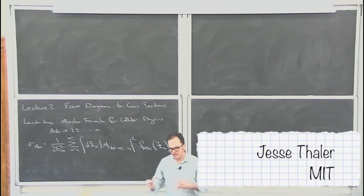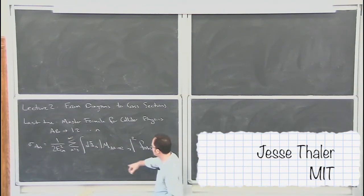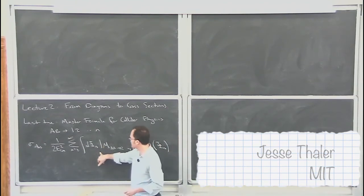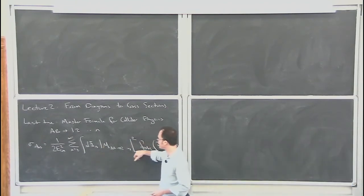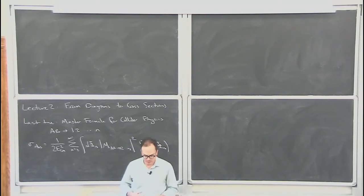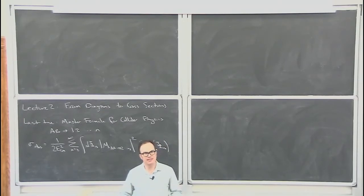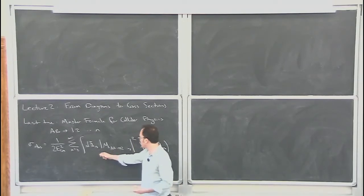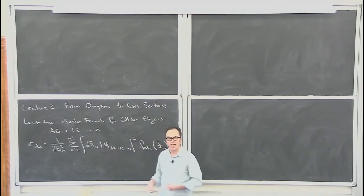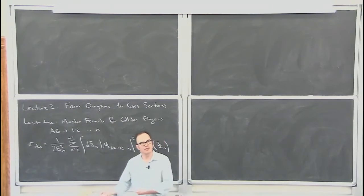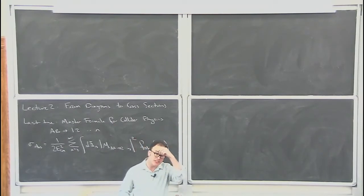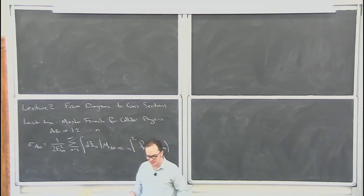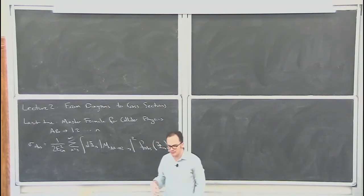I'm not going to talk that much about how one actually goes about computing Feynman diagrams — that's in this master formula, and of course this amplitude squared. What I really want to emphasize in this lecture is how, if someone were to give you this object, how one goes about converting that into a cross-section and some of the conceptual challenges that appear when trying to make that translation.